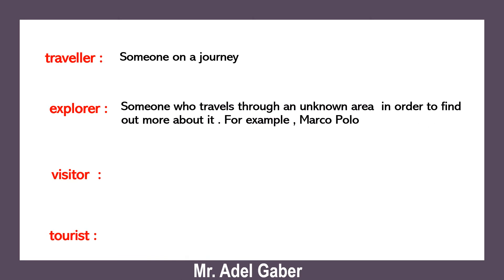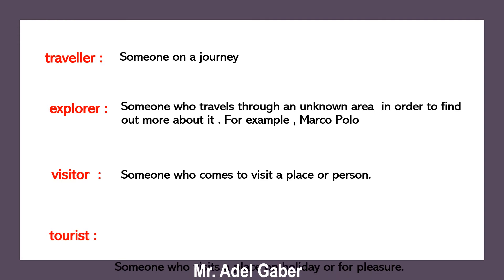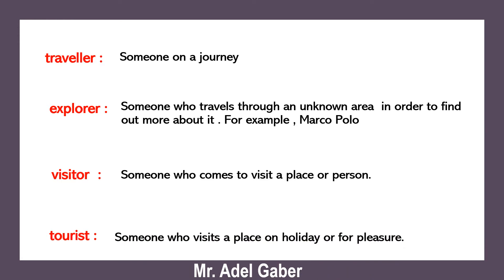A traveler is someone on a journey. An explorer is someone who travels through an unknown area in order to find out more about it — for example, Marco Polo. A visitor is someone who comes to visit a place or person. A tourist is someone who visits a place on holiday or for pleasure.